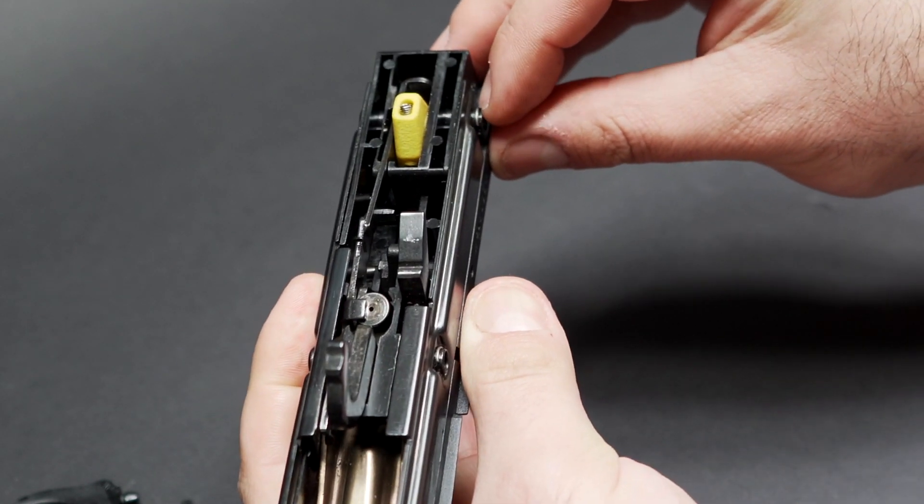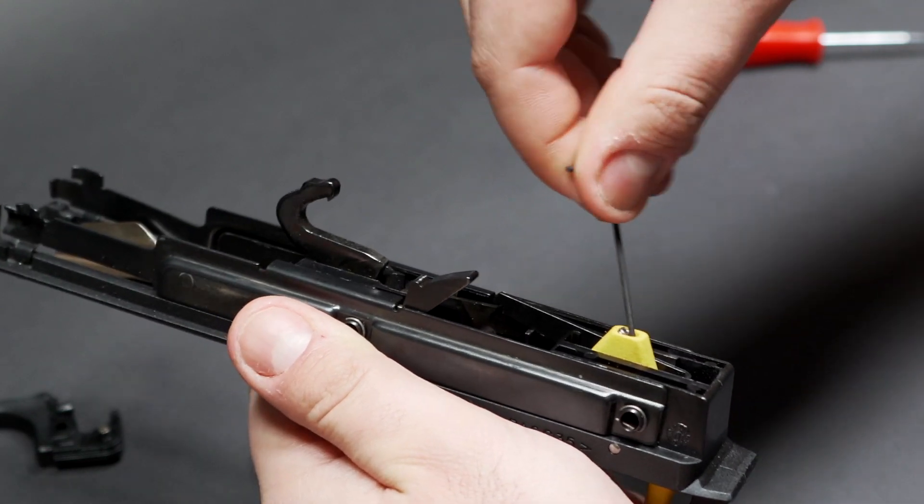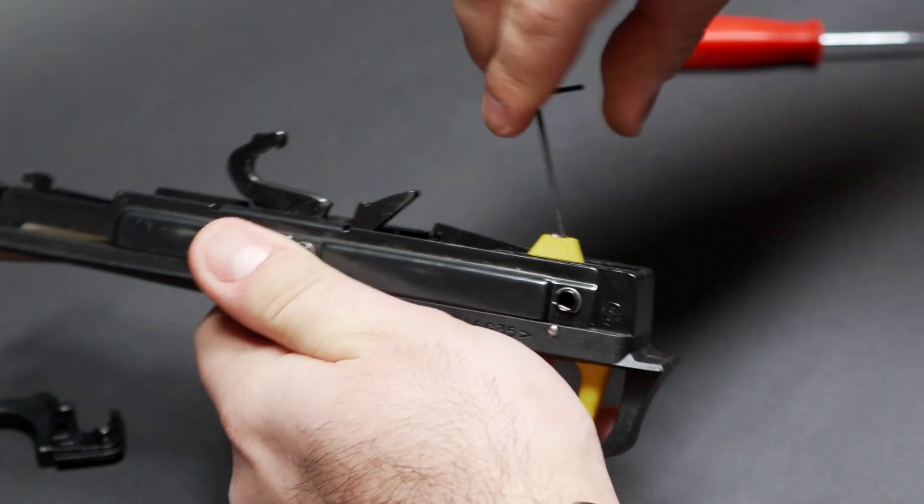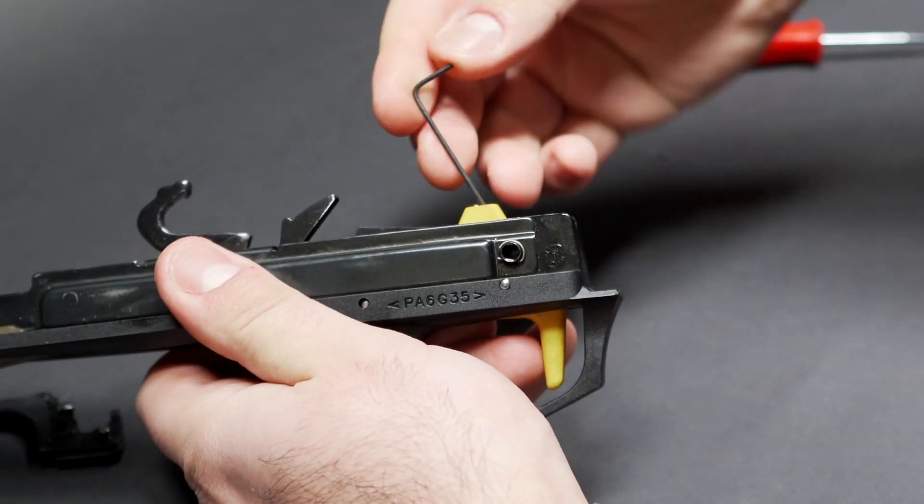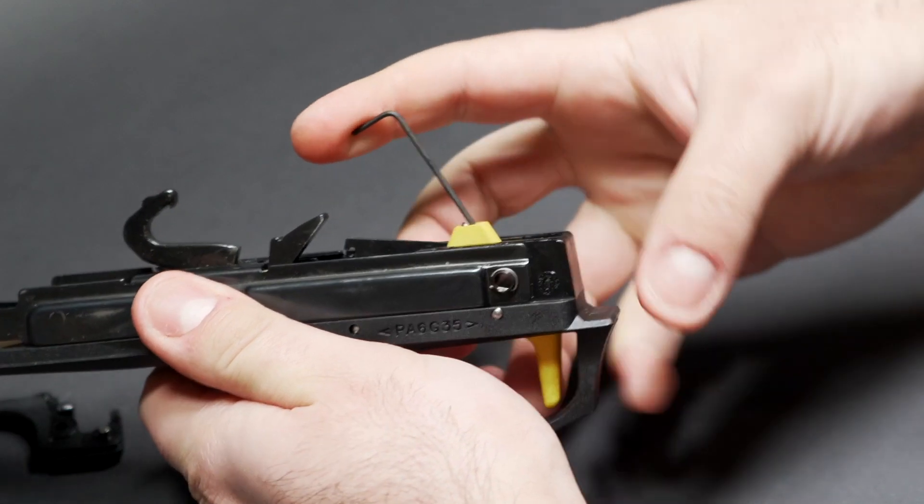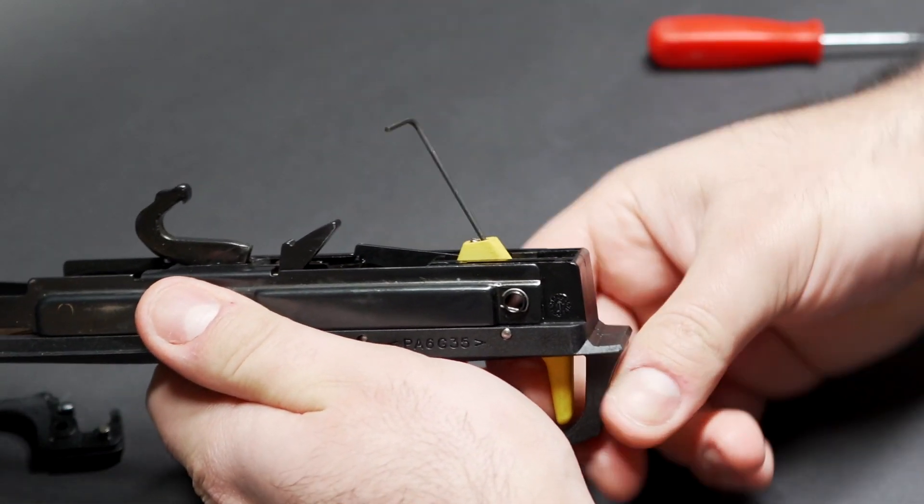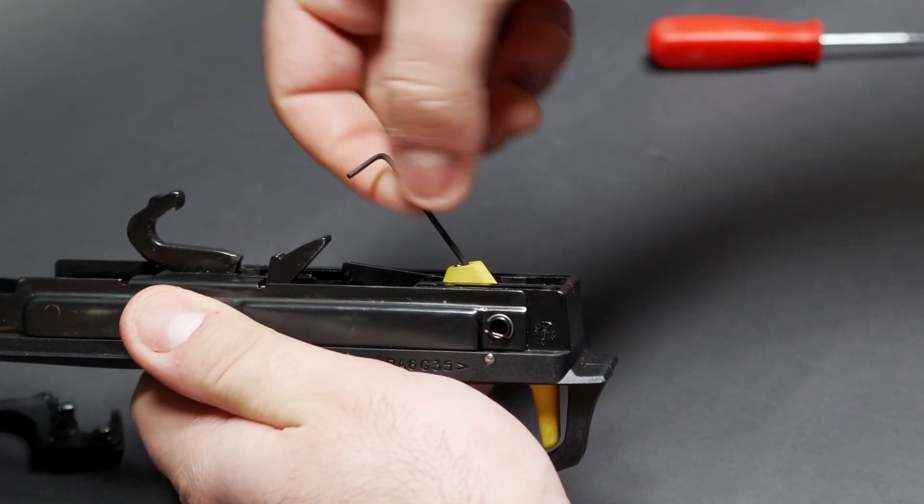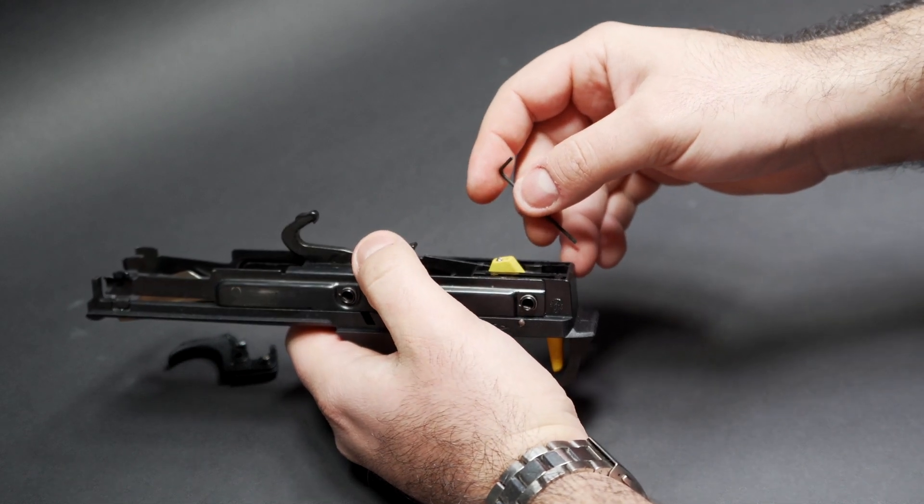Then what you need to do is take your 1.5 millimeter allen key, and whilst testing the trigger, screw in the rear most screw until the trigger doesn't move anymore. You should see it start moving backwards of its own accord like so, and just keep checking it, making sure it gets to the end of its travel. Once it's to the end of its travel like that, be careful not to over tighten this.